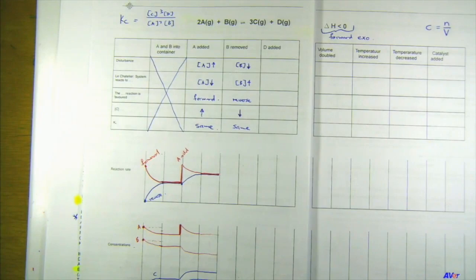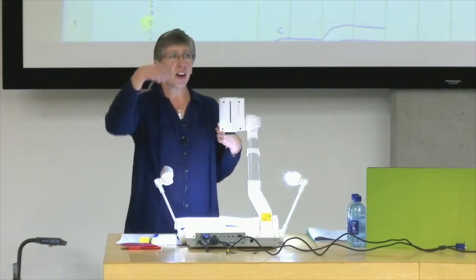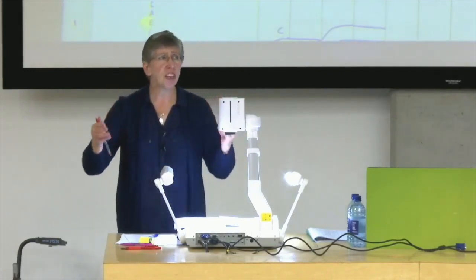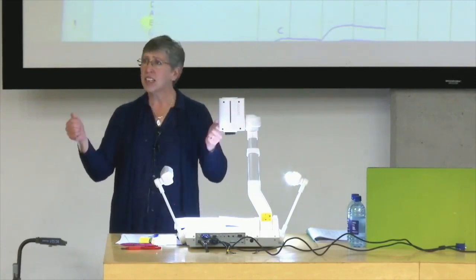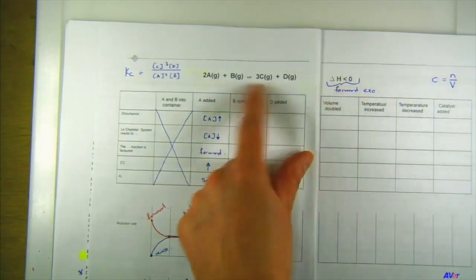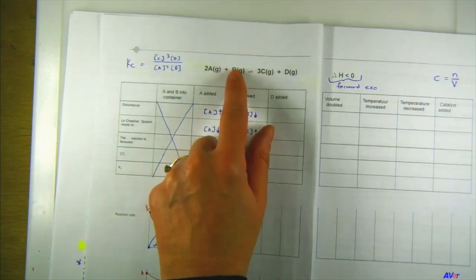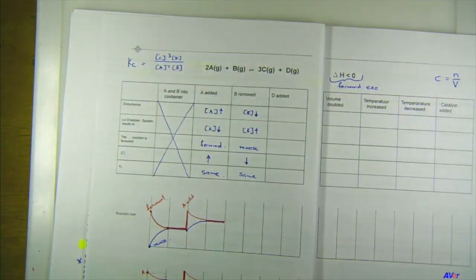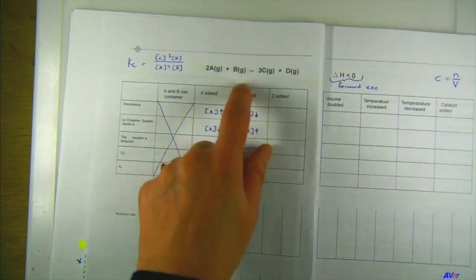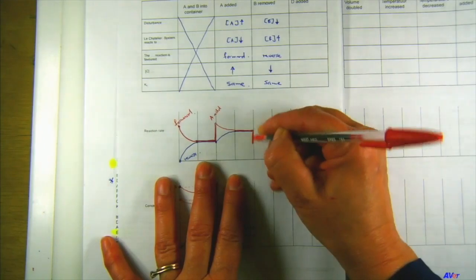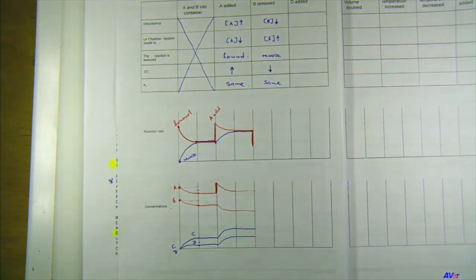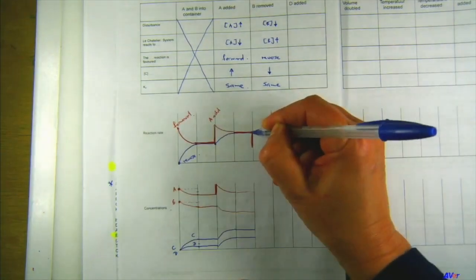On the rate graph: if concentration decreases, the rate goes down — fewer particles, fewer effective collisions per second. Removing B slows down the forward reaction. I'm not removing any C or D, so the reverse reaction rate stays where it was. Then they split the difference and reach a new equilibrium.